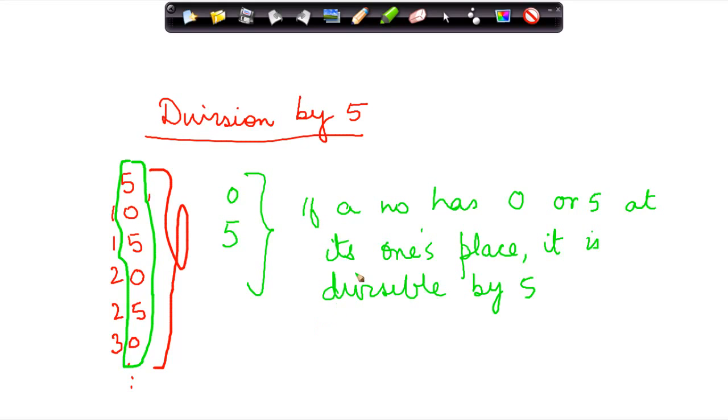Now if you have any number, any number for that matter, let's say I have a number 195. Now I want to divide this by 5. So 5 into 1 will not go, 19 divided by 5 is 3, that's 15.